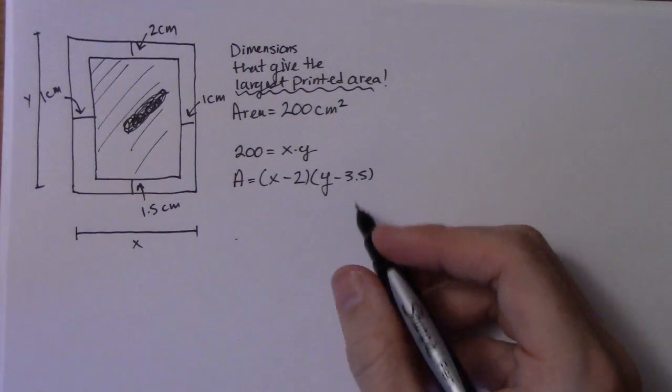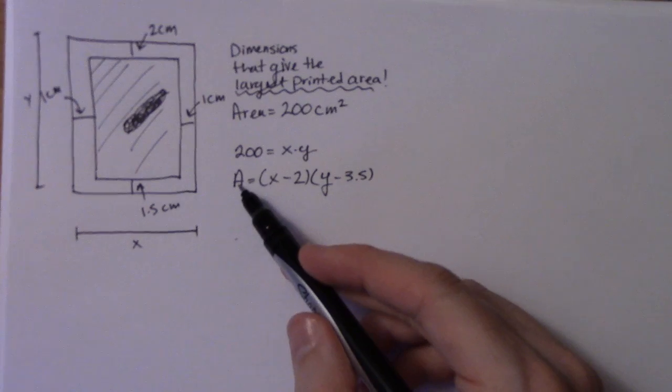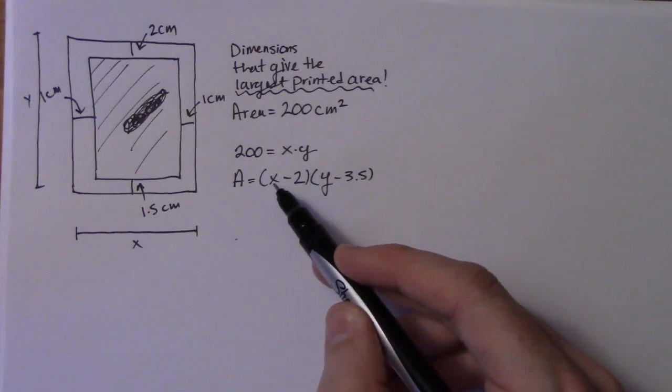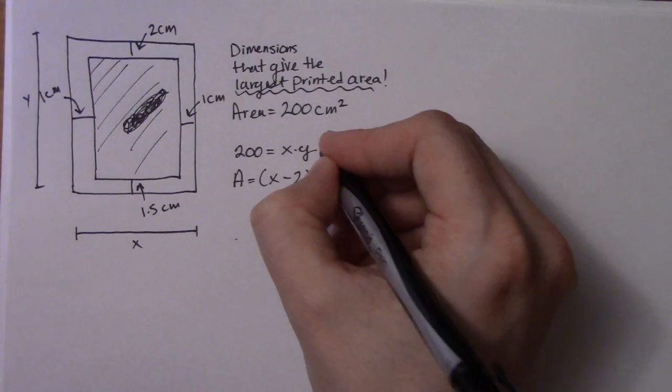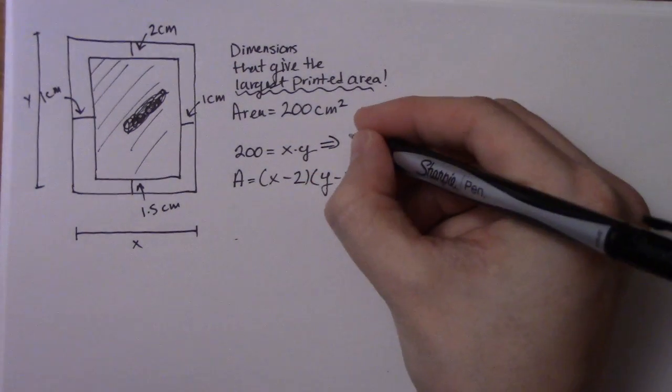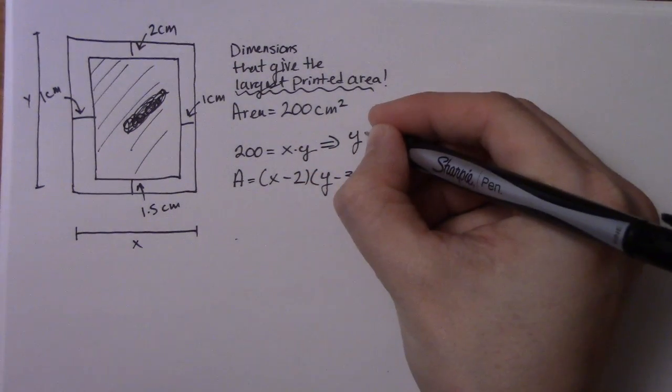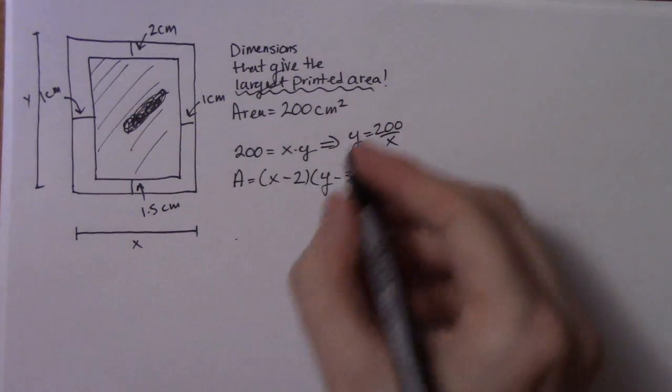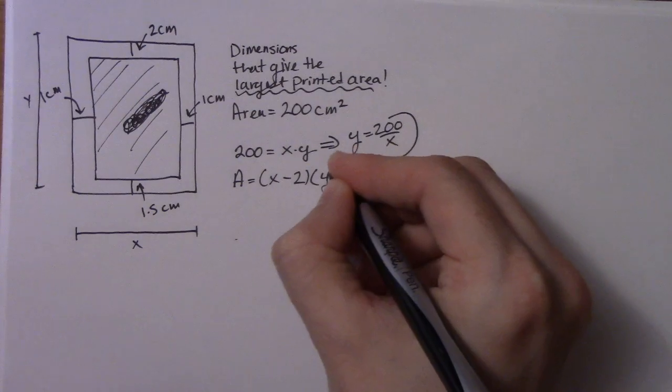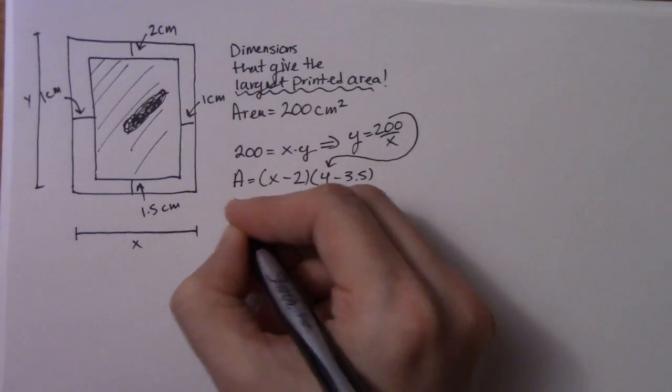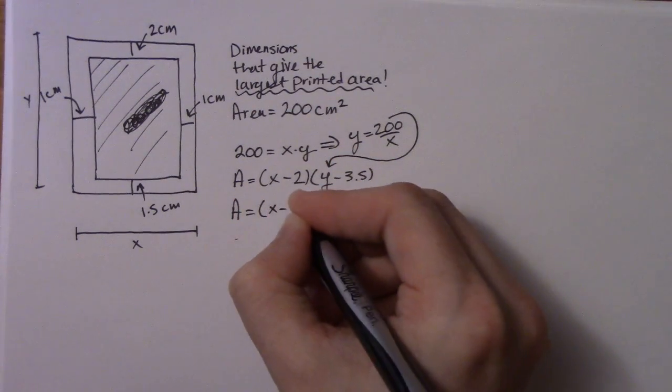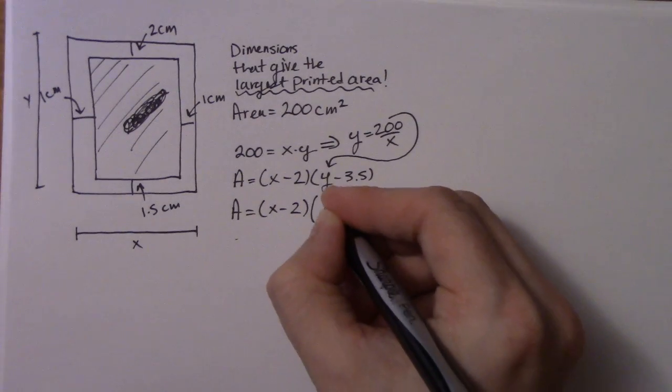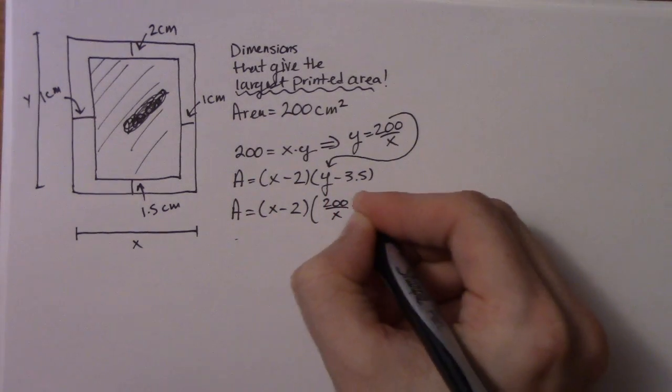So obviously I got something going on here where I have three variables: A which I need, x and y. So I have to choose between x and y. That's why we always need two formulas, because we need one of these that we rearrange. So I'm going to call that y is equal to 200 over x. So generally I just plug this guy right in here. So area is equal to (x minus 2) times (200 over x minus 3.5).